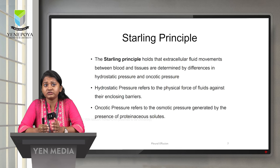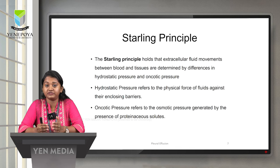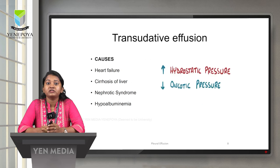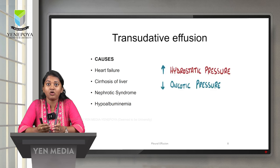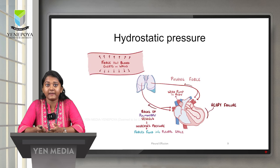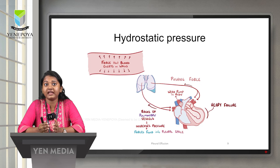Hydrostatic pressure refers to the physical force of a fluid against its enclosing barriers — that is, the force exerted by the blood on the walls. Oncotic pressure refers to the osmotic pressure generated by the presence of proteinaceous solutes. Transudative effusion is caused by an increase in hydrostatic pressure or a decrease in oncotic pressure. The causes where we see transudative effusion include heart failure, cirrhosis of the liver, nephrotic syndrome, and hypoalbuminemia.